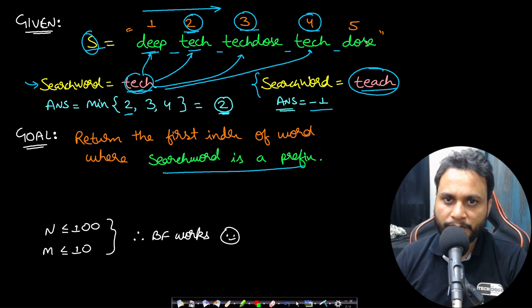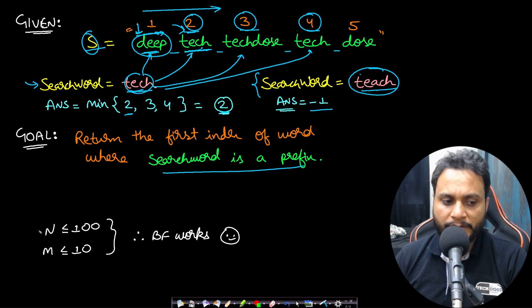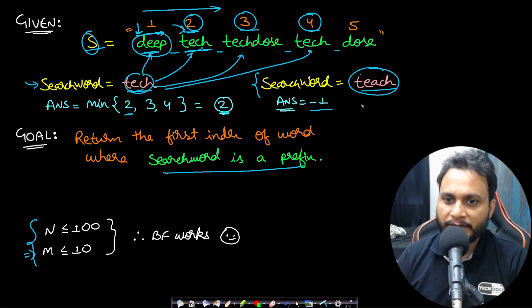If you want to solve this problem, what you can do is take out each word one by one — just keep a simple pointer and keep moving from left to right. You extract each word and match whether the search word is actually occurring as a prefix of that word. If it is not, pick the next word and compare again. This will be a linear time algorithm and will definitely work because the constraints are very small. So the first step is to extract each word and then compare each word one after another with the search word for the prefix. You can use two pointers to solve this as well.